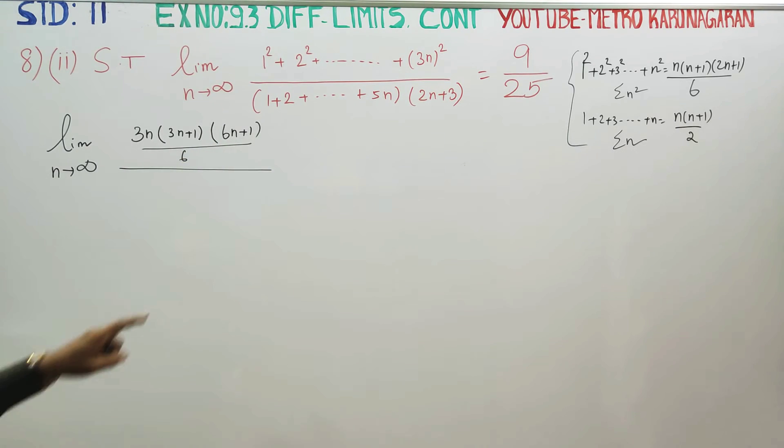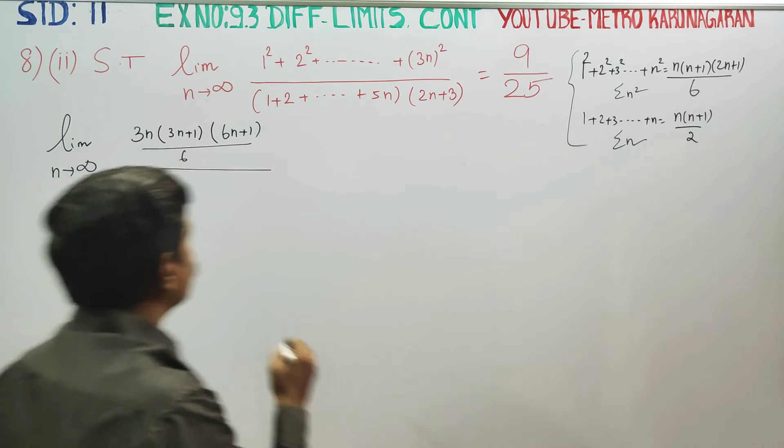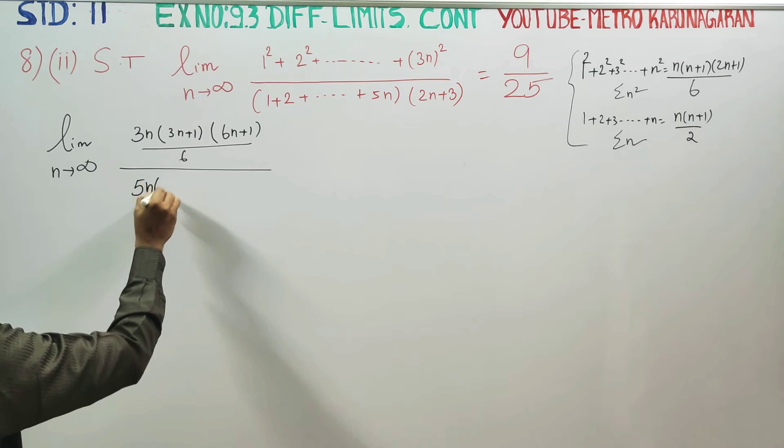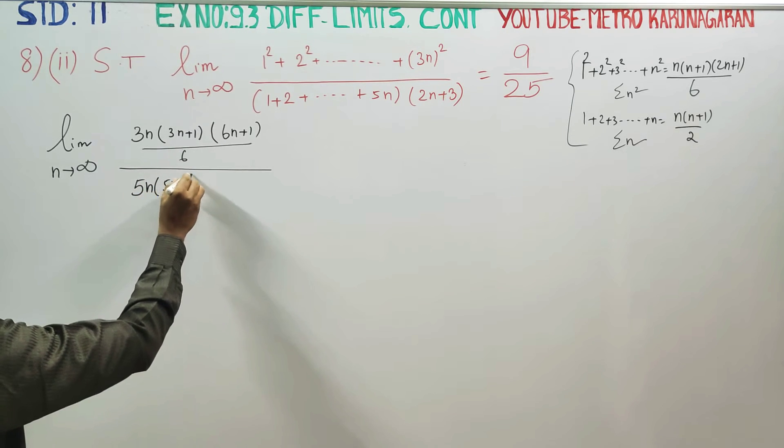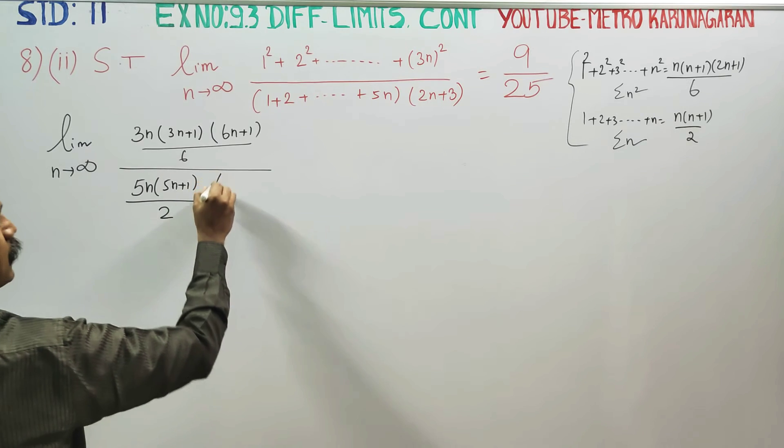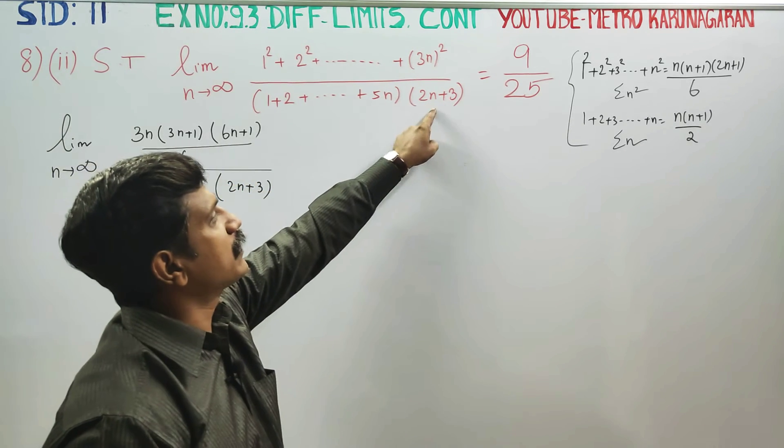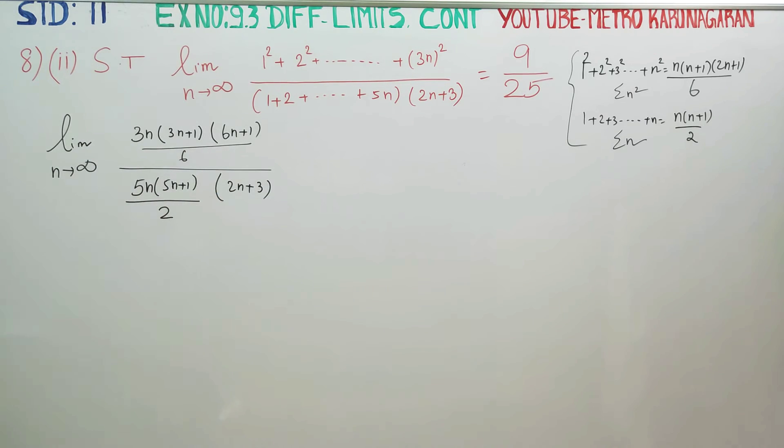Coming back to denominator. 1 plus 2 plus ... plus 5n. Here substitute 5n. Here n is 5n into 5n plus 1, all divided by 2, into 2n plus 3. That is the question.